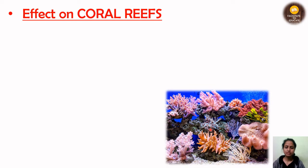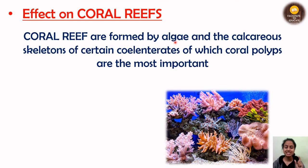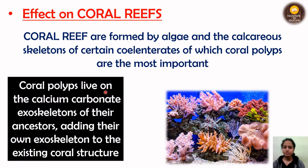Now we will see the effect on coral reefs. Coral reefs have a large variety of organisms — you can see from the picture how many organisms are present in just one image. A coral reef is formed by algae and the calcareous skeleton of certain organisms, of which coral polyps are the most important. It represents a mutual relationship between coral polyps and algae. The coral polyps live on calcium carbonate exoskeletons of their ancestors, adding their own exoskeleton to the existing coral structure.